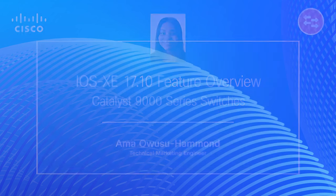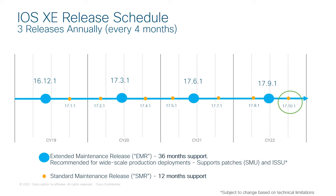This release is positioned to bring in enhanced features that will be unique to Cisco, and will serve as the key differentiators against competitors. It will also provide additional software feature parity for the new Silicon One hardware platforms to drive mid-cycle refresh. It is a standard maintenance release and has a support lifetime of 12 months.